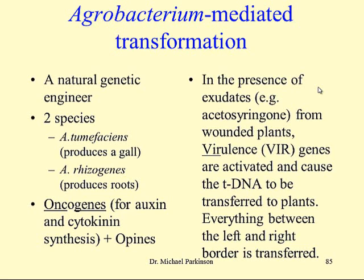One other important point about agrobacterium-mediated transformation is that once the DNA gets into the cytoplasm, it needs to be taken up into the nucleus for stable transformation to occur. This will only happen in dividing cells during nuclear division, so your cells need to be dividing. Fortunately, when cells are wounded, one of the first things that happens is cell division. But if you have tissues that aren't dividing, you need to kick them into cell division to get stable nuclear transformation through agrobacterium.